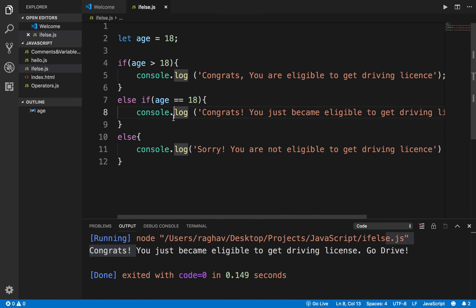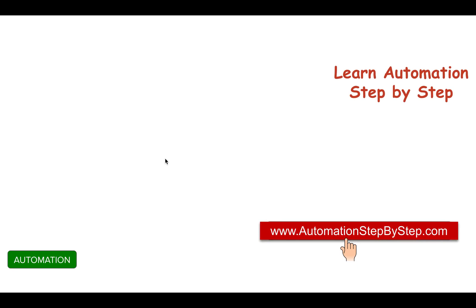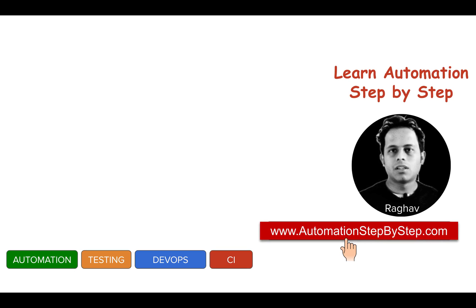This is how we create if, else-if, and else blocks in JavaScript. I hope this was very useful for you. You can do some more hands-on practice with more examples, and let me know if you have any issues. I'll meet you in the next episode of JavaScript. Thank you for watching!